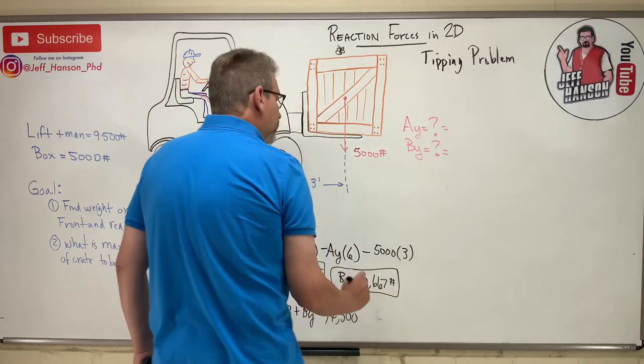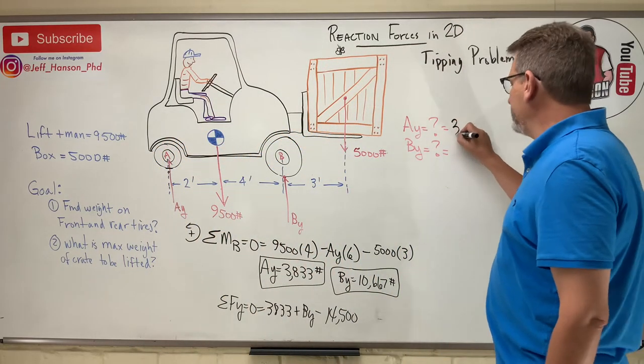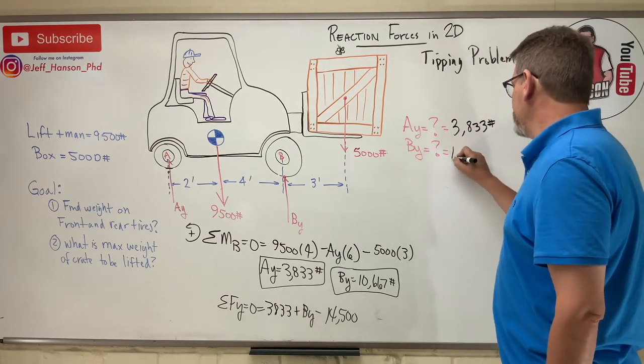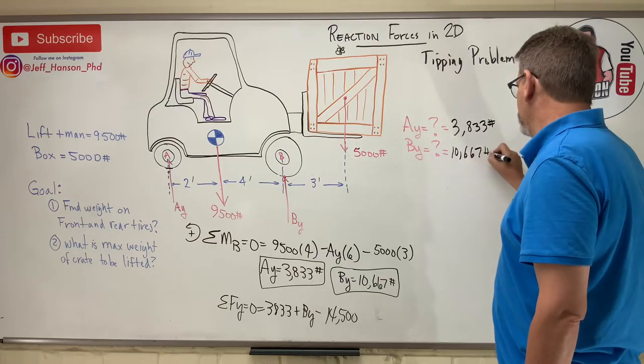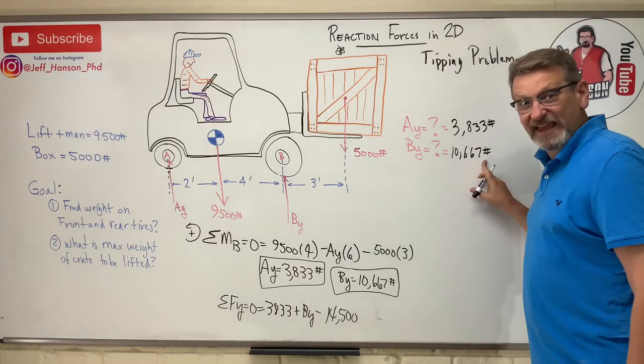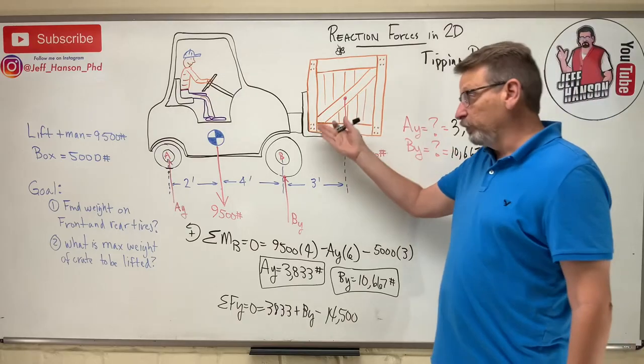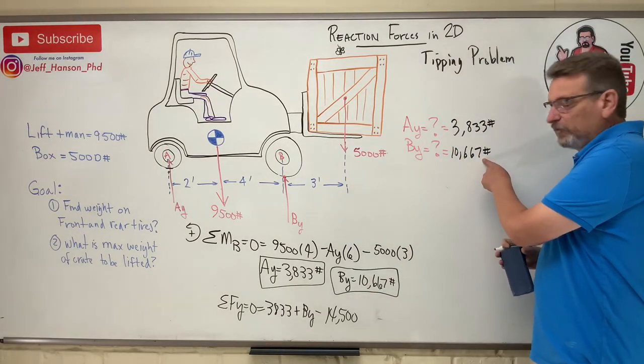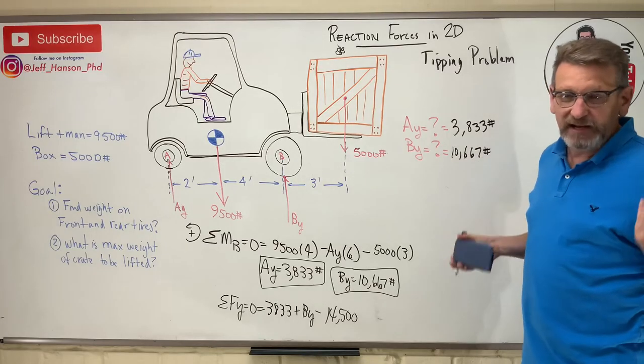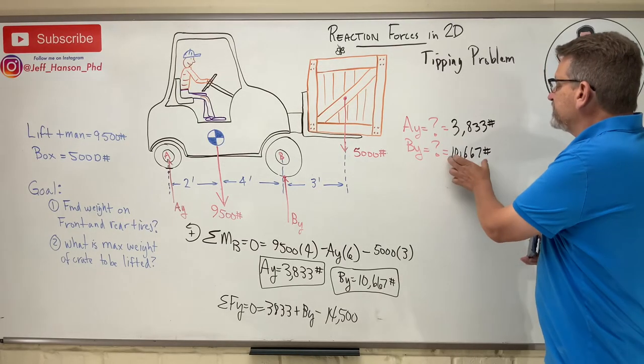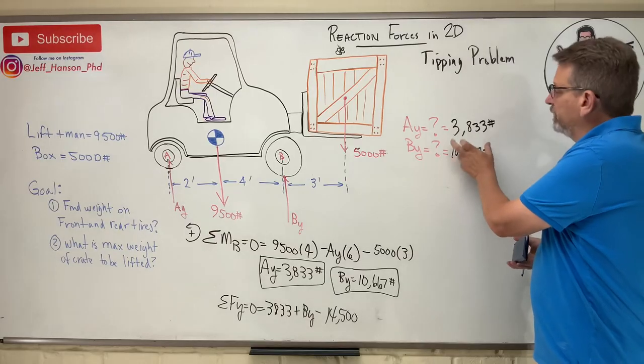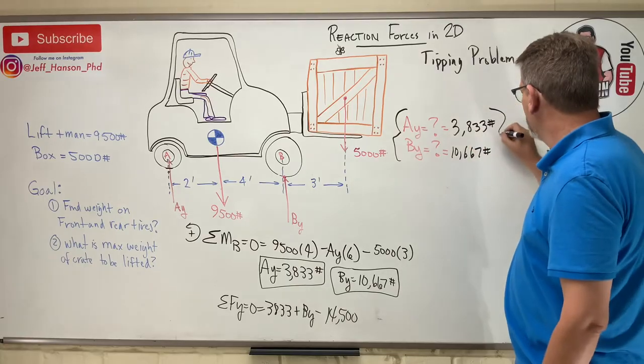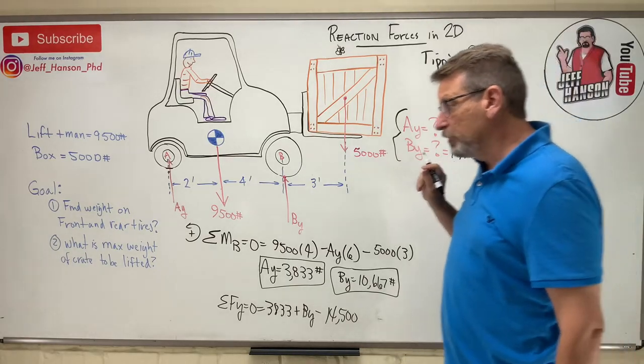All right, there you go. So that's what's here, right? Ay 3,833 pounds and By 10,667 pounds. And of course if they ask you for each one of the tires, because there's one on the left, one on the right, half of it would be carried by the left, so I'd have to divide these numbers by two if they wanted each tire. So this is the force on the front axle, this is the force on the back axle. Okay, so there's part A or part one.